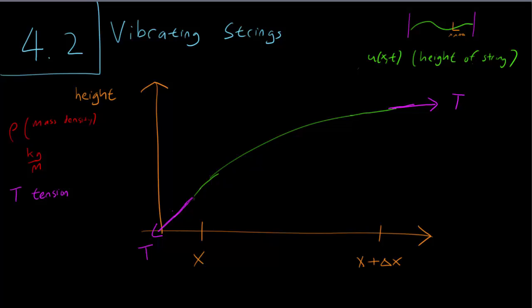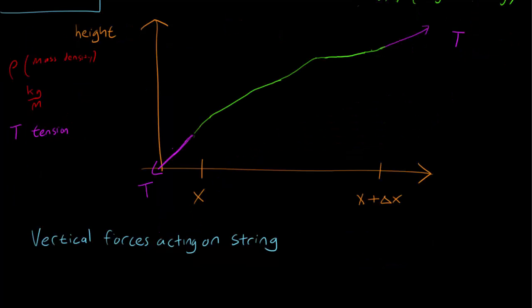Using this information, we are going to try to develop a differential equation that we can use to model the movement of the vibrating string. Let's consider what forces are acting on the string. We are only going to care about vertical forces, forces that move the string up or down. We are going to ignore forces moving the string left or right. The first thing to think about is Newton's law: F equals mass times acceleration.